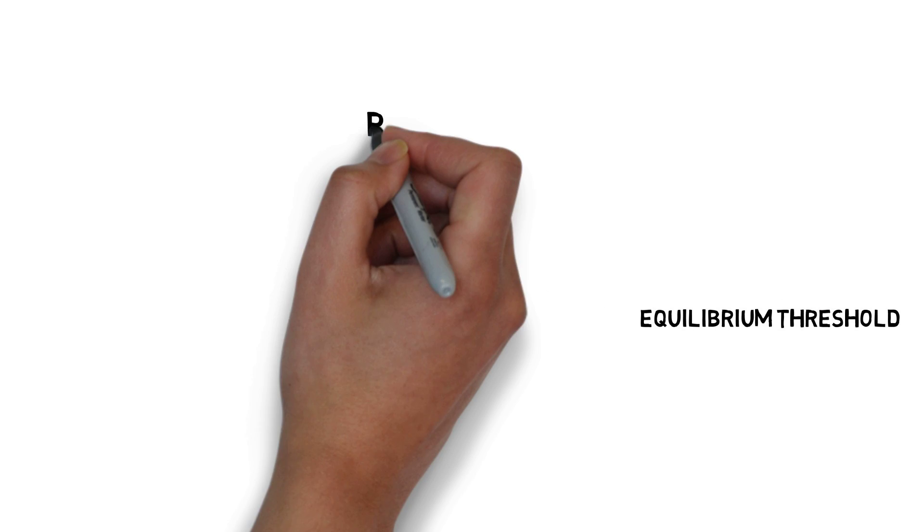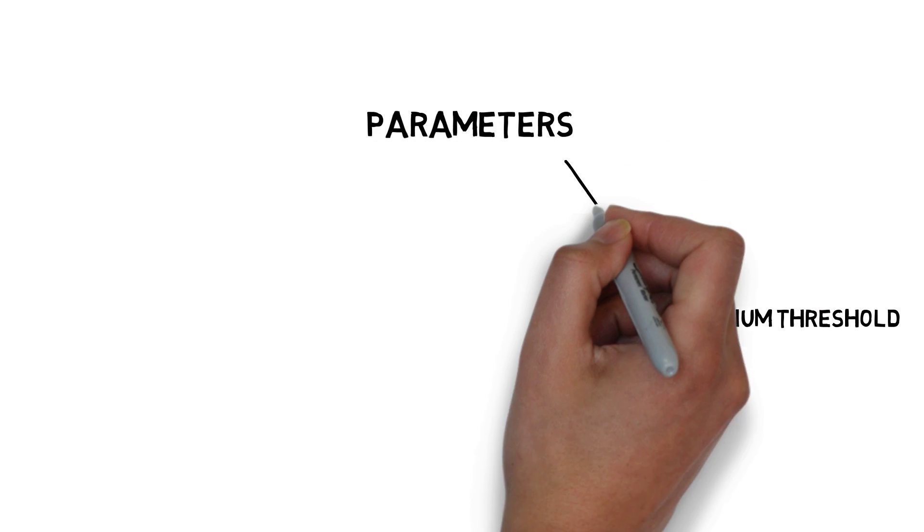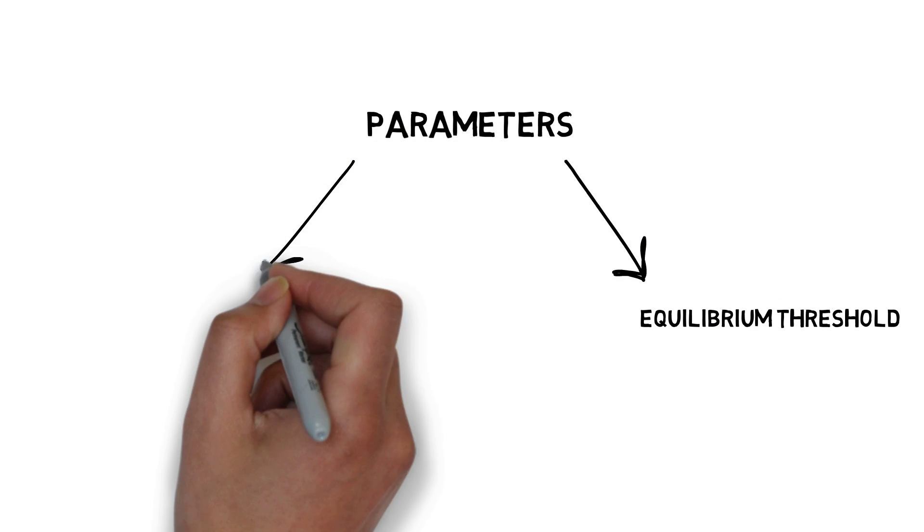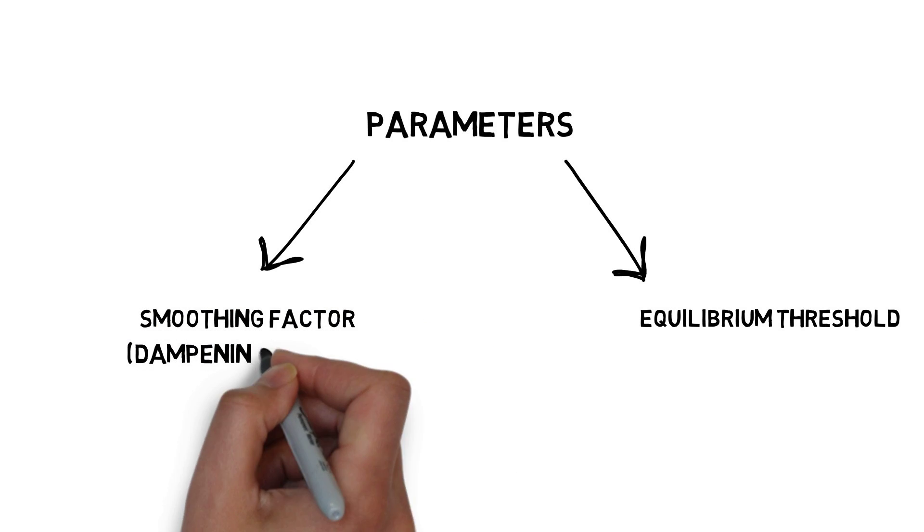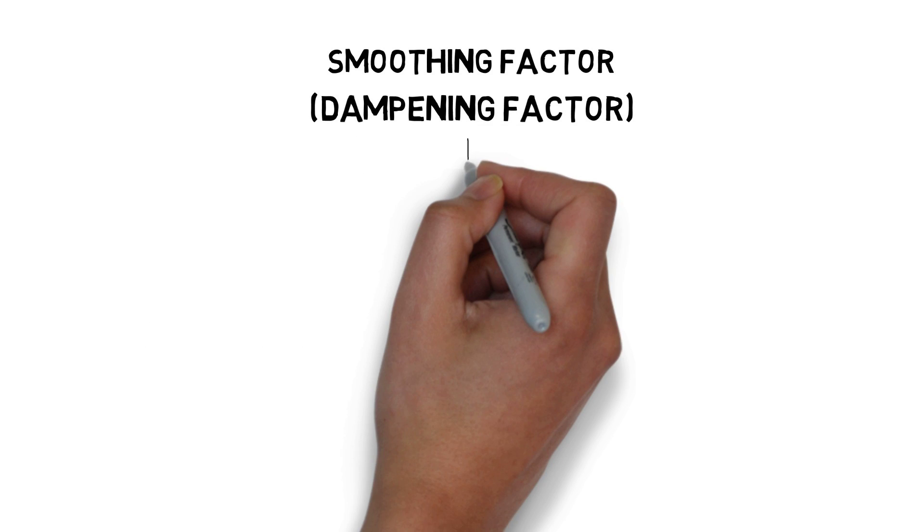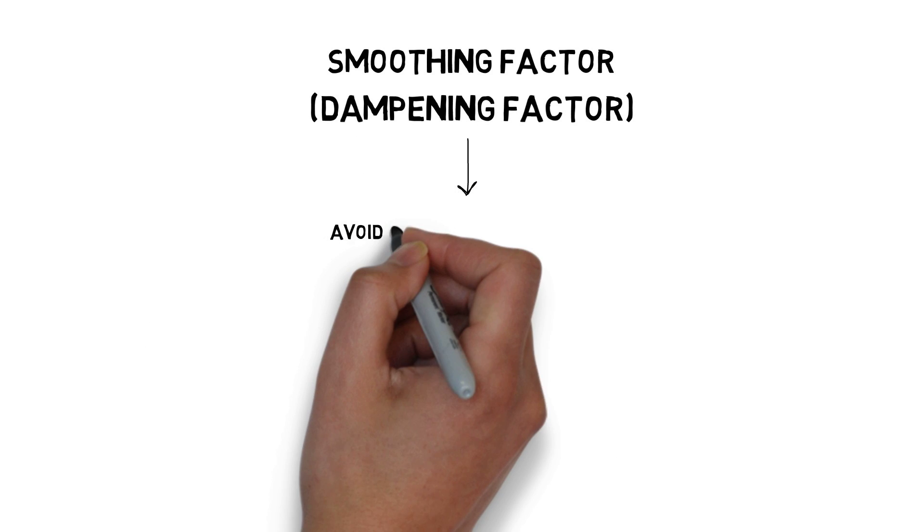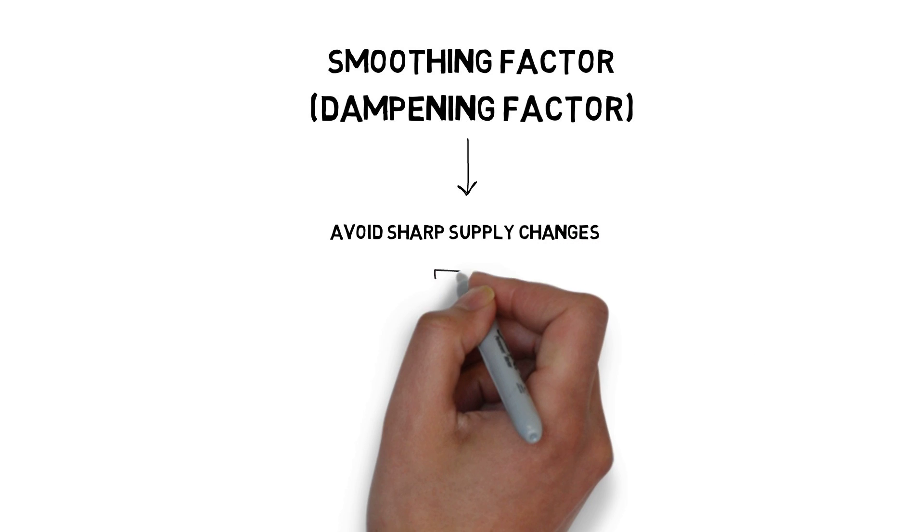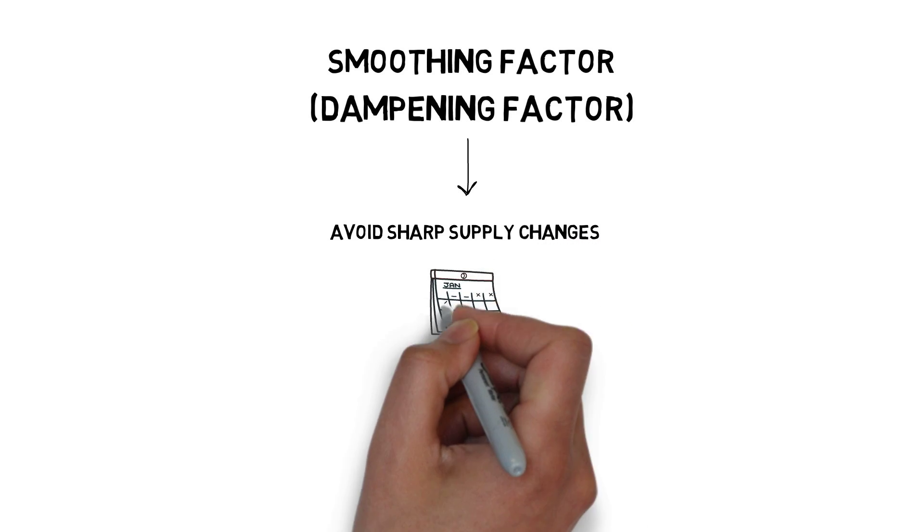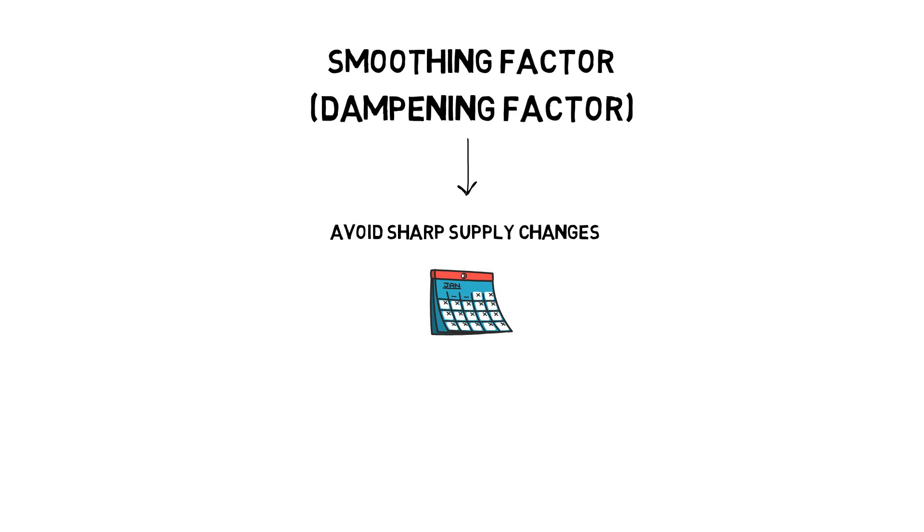The percentage that is used in the rebase function is also called the equilibrium threshold. It's one of the two main parameters in the Ampleforth protocol. The second parameter represents a smoothing factor, also called a dampening factor. The dampening factor is used to avoid sharp supply changes. Currently, the protocol spreads the supply change over a period of 10 days. This means that if, for example, the rebase function results in a 50% expansion, that 50% would be spread over 10 days, so it would result in a 5% supply increase on the day when the rebase function is called.